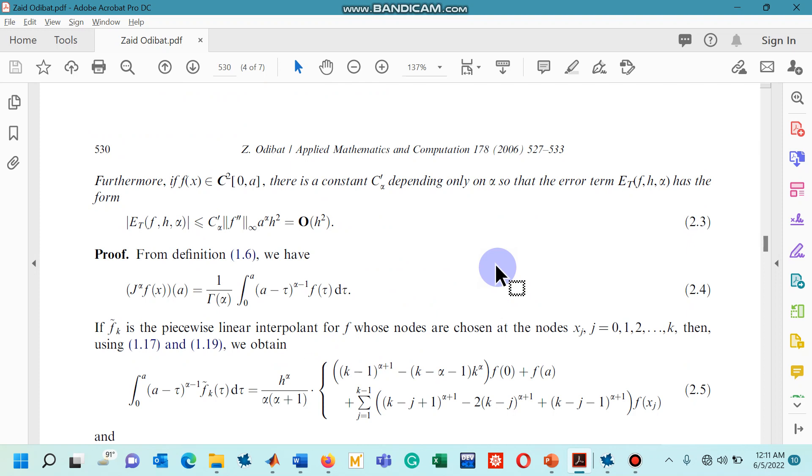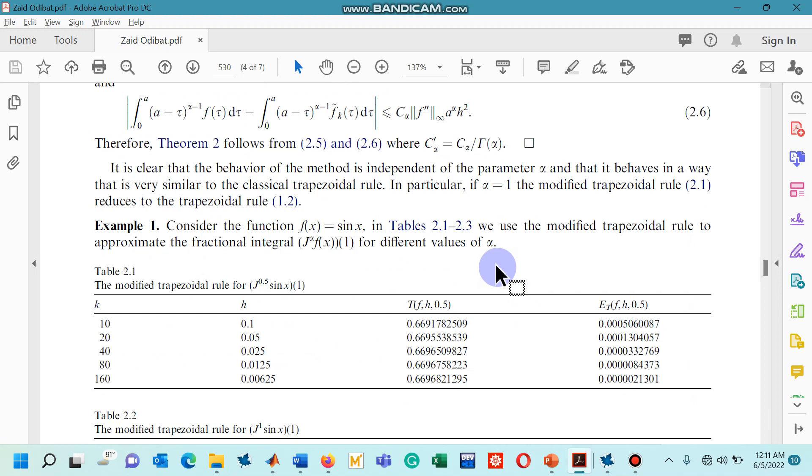Some error analysis has been presented based on the theorems given in preliminaries and then some examples are solved. For example, you can see in the first problem sine function is taken and its alpha order fractional integral is computed at the final mesh point which is taken to be 1. So, 0.5 is the order of the fractional integral. Different step sizes are taken and the third column shows the approximate answer while the last column is the column for absolute errors.